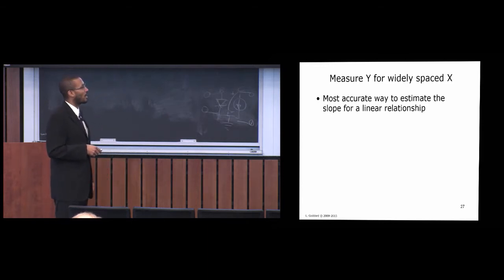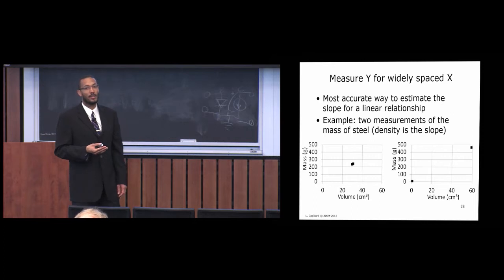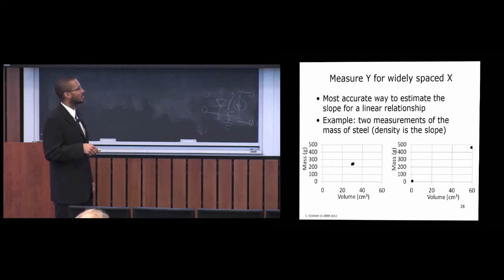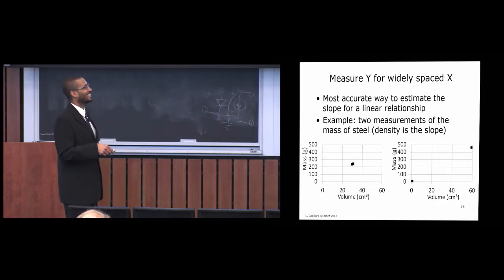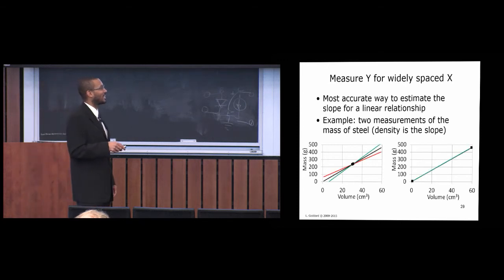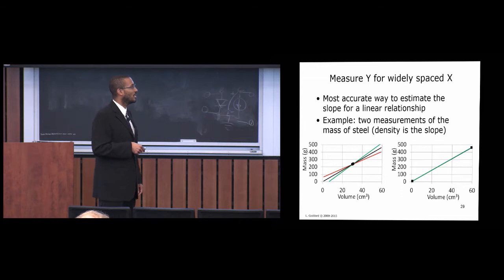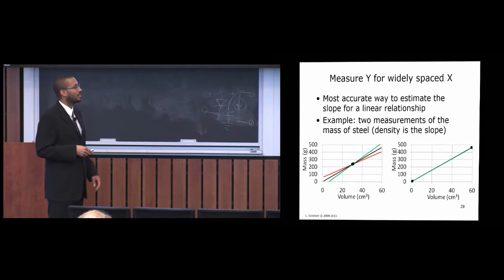To accurately measure the slope of a linear relation, we want to measure Y for widely spaced X. For example, measuring the density of steel: in one experiment we measure two very closely spaced volumes and their masses; in another we measure two widely spaced volumes. In the second case we get a more accurate slope, because in the first case many different lines and slopes could pass through those closely spaced points. So space your X variable as far apart as possible, within a safe range.